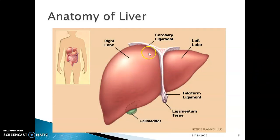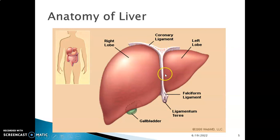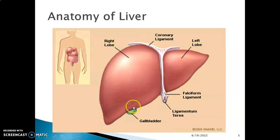The liver has a right lobe and a left lobe separated by the falciform ligament. Above, you have the coronary ligament, and the inferior part of the falciform ligament is the ligamentum teres. These are the diaphragmatic surfaces of the liver. On the visceral face, you can see the gallbladder forms part of the visceral region of the liver.